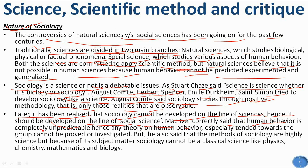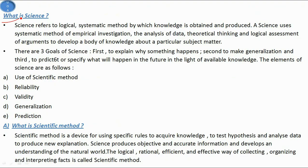MacIver correctly said that human behavior is completely unpredictable; hence any theory on human behavior, especially tending towards groups, cannot be proved or investigated. But he also said that the methods of sociology are highly scientific. Because of its subject matter, however, sociology cannot be a classical science like physics, chemistry, mathematics, or biology.